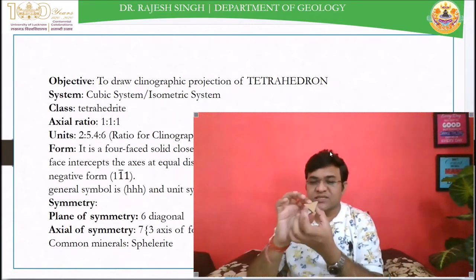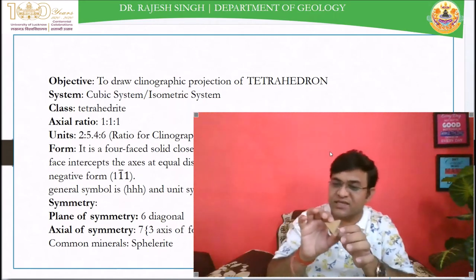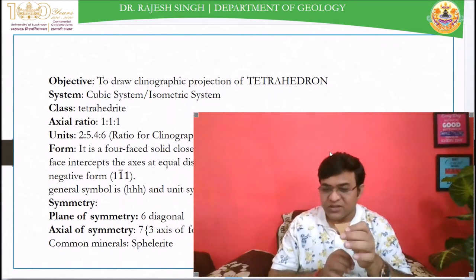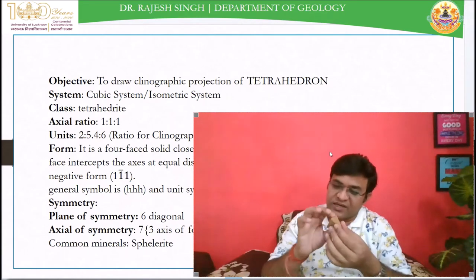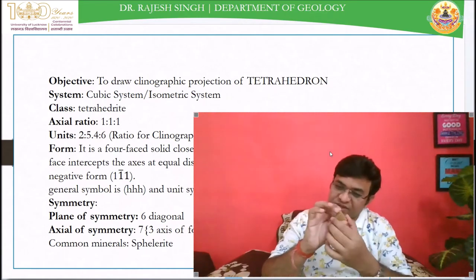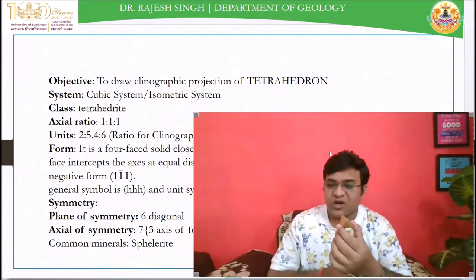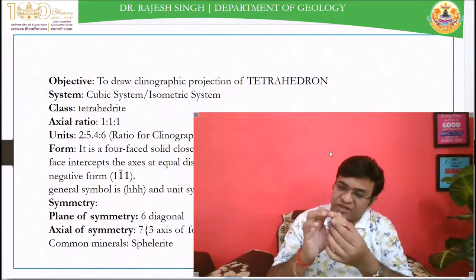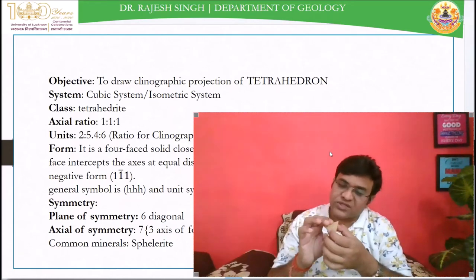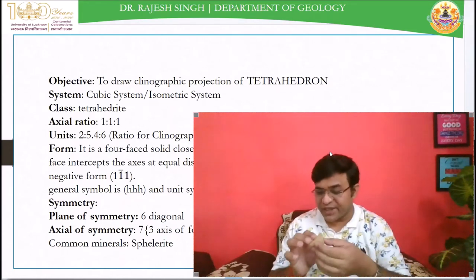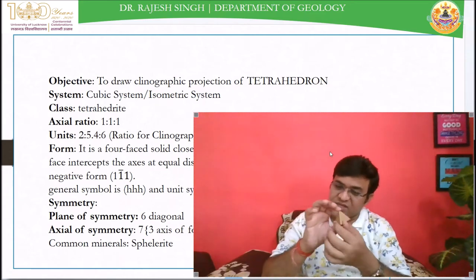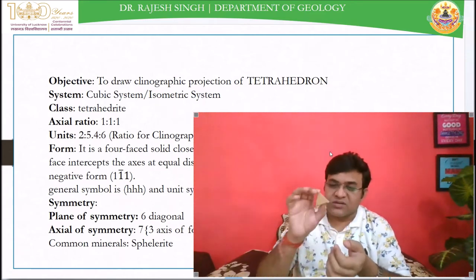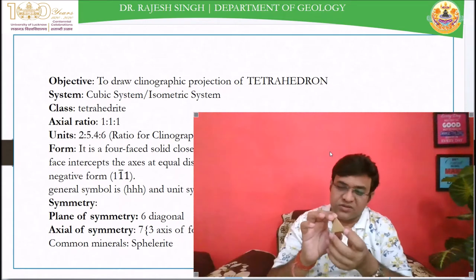How many such axes are there? Three. So there are three axes of fourfold roto-inversion — these are the crystallographic axes, which are showing fourfold roto-inversion. And four such diagonal axes are showing the threefold rotation.